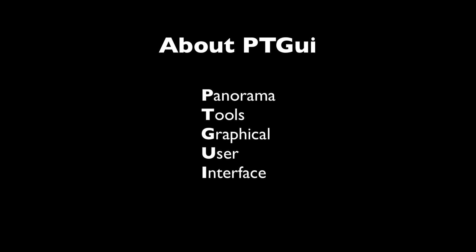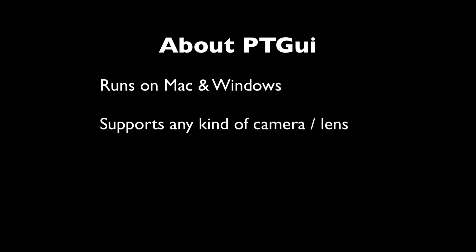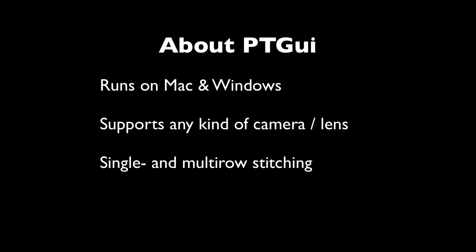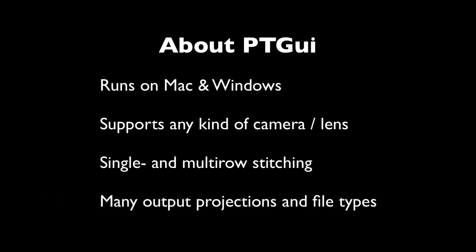But today it no longer uses PanoramaTools — it has everything built in such as a blender or a stitcher, and of course the graphical user interface. It runs on both Mac and Windows. You can use it with any kind of camera or lens. You can even scan your photos and stitch them together later on. You can have single row or multi-row panoramas, and you can output in many different projections and file types.